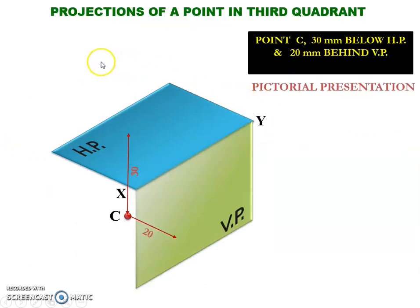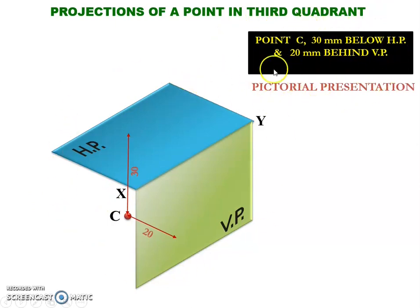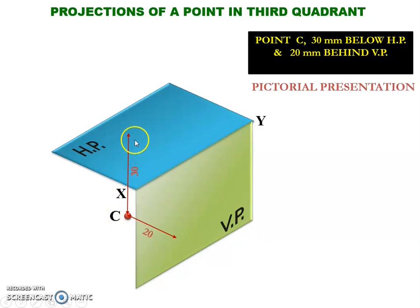We are going to find the projections of a point located in the third quadrant. First we shall solve this problem using the general method, then we can continue to the shortcut method. The diagrammatic representation of this problem can be shown like this. It is given that the point is located 30 mm below the horizontal plane and 20 mm behind the vertical plane. Here you can see the point C is located 30 mm below the horizontal plane and 20 mm behind the vertical plane.